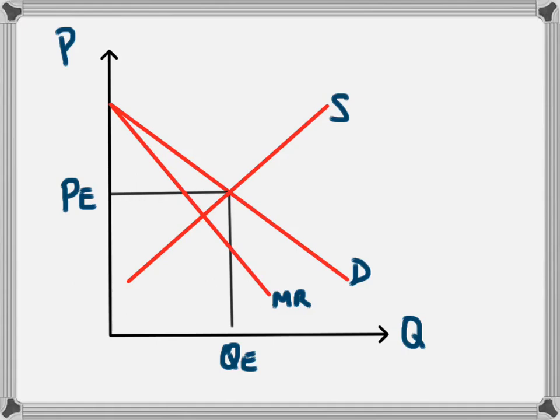In perfect competition, the marginal cost curve is a combination of all the supply curves of all the individual firms in that perfect competition. Now that we just have there being one firm, which is a monopoly, then all the supply curves combined together is just this supply curve and so therefore this supply curve is also the marginal cost curve.